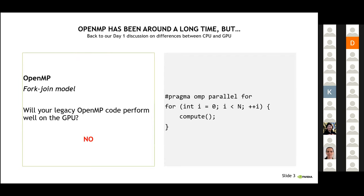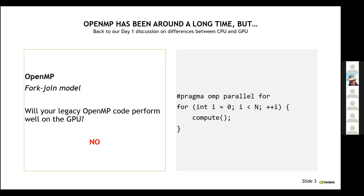Back to our discussion from day one: does that mean if I have OpenMP code that I've been using on a CPU for the last 10 years, is that going to perform well on the GPU? Unfortunately, no. The architectures are just so different that things you've been taking advantage of on the CPU will not perform well on the GPU.